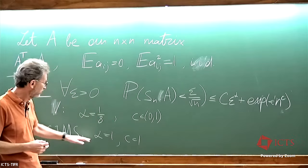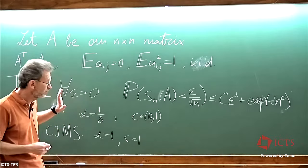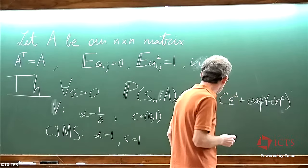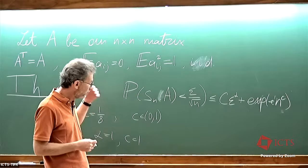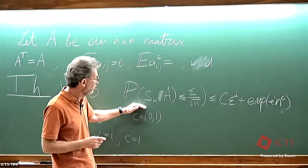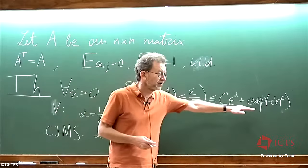To pass from Vershynin's theorem to the optimal bound, we need to improve two parameters, and both are very non-trivial — these are two separate routes. I'm going to discuss removing the constant C. If you plug in epsilon equals 0, this would prove that a random symmetric matrix, in particular a random Bernoulli symmetric matrix, is singular with at most exponentially small probability.